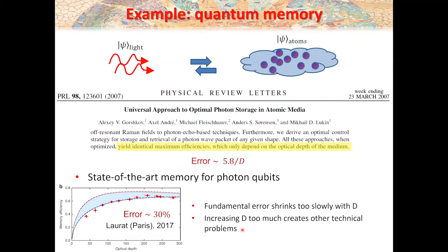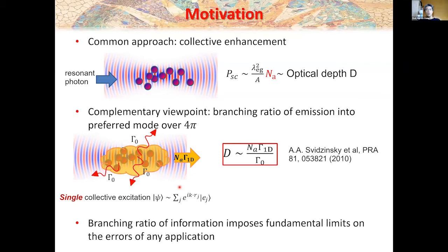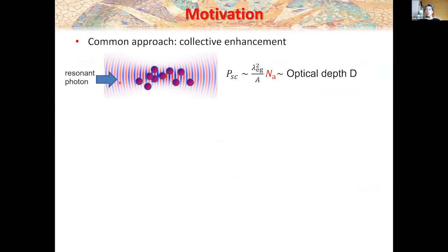Question: can you please explain what the optical depth is? Optical depth is: if you have one atom interacting with resonant light, the interaction probability is given by the scattering cross section of a single atom divided by your focal area of the beam. When you have many atoms, your interaction probability is basically N times that. That's basically the definition — the figure of merit for how efficient you expect your atom-light interface to be.